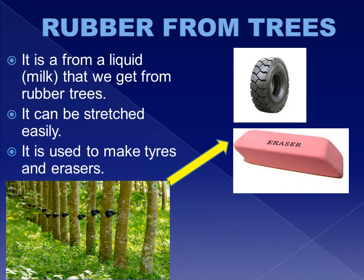We also get rubber from nature. It is a form of liquid — the milk which we get from the rubber plant. It can be stretched easily and is used to make rubber tires, rubber bands, erasers, and many other things.